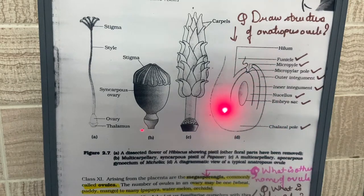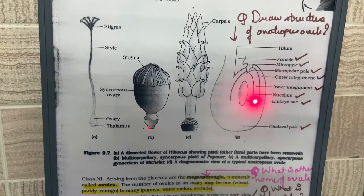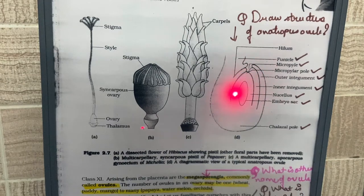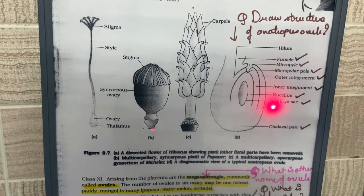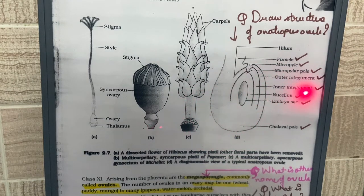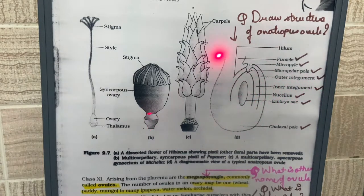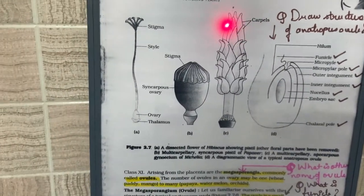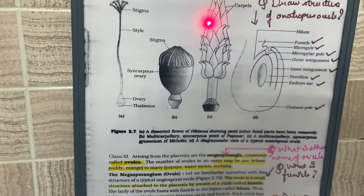In the center of the ovule there are many cells known as the nucellus, which have abundant food reserves. In the center of the nucellus is the embryo sac, which represents the female gametophyte. You should know that the outer and inner integuments, after fertilization, develop into the seed coat.